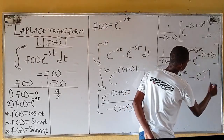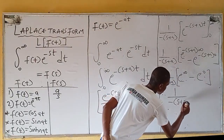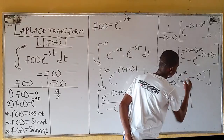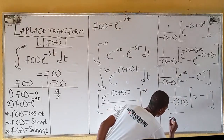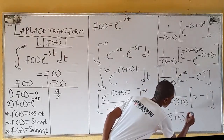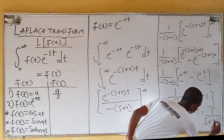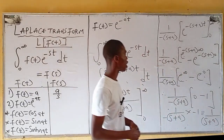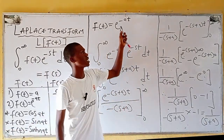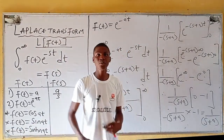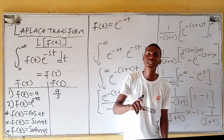This becomes 1/(-(s+a)) times [0 - 1], which equals 1/(-(s+a)) times (-1), giving us 1/(s+a). So f(t) = e^(-at) transforms to F(s) = 1/(s+a).